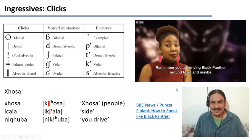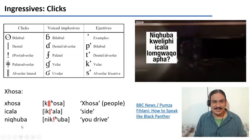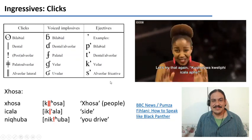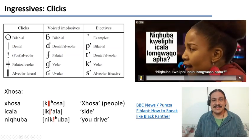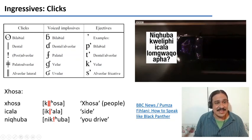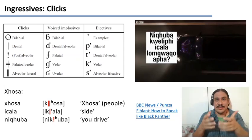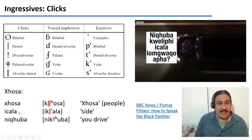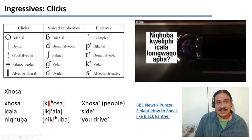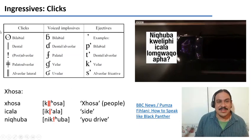In Xhosa you use your teeth and tongue to suck air in. The two example words shown were 'ikhala,' meaning 'side,' and 'nikubeka,' meaning 'you drive.' For example, the bilabial click is like 'mwah' — there is a little amount of air coming in. These are the clicks.